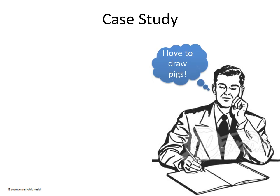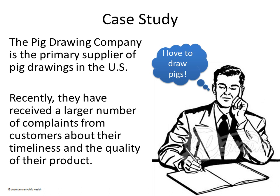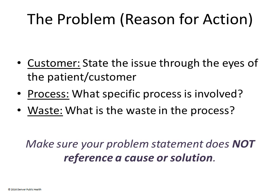Now we will take you through an example. The Pig Drawing Company is the main supplier of pig drawings in the United States. Supervisors receive numerous requests for pig drawings from very important customers. To complete orders, supervisors ask employees to draw pigs, then review the drawings, return any that do not meet standards, the employee fixes the drawing, and the supervisor finally submits qualified drawings to the director. Unfortunately, they have recently received an increased number of complaints about timeliness and quality.